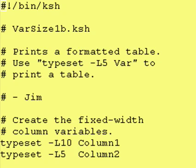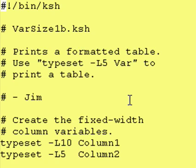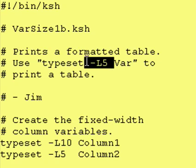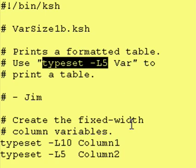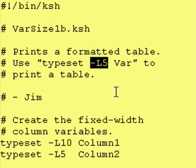Hey everybody, it's Jim, and welcome back to another lesson of introduction to Cornshell. Last time we talked about using the typeset -L command to create variables of a fixed width. In this example, we are creating a variable called var. It is always five characters wide, and any time you try to stuff data into it, Cornshell will take the first five characters starting from the left. So even if you try to put eight characters into it, Cornshell will only take the first five. Creating variables using the typeset command with a fixed width is good for creating formatted output, such as tables.